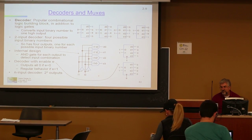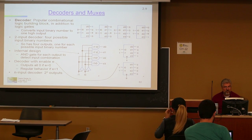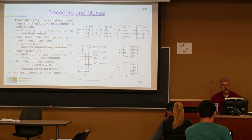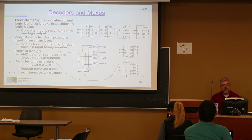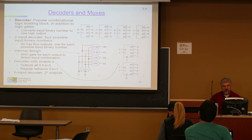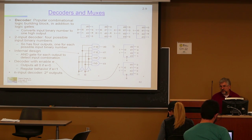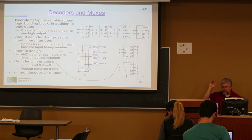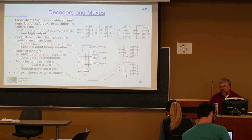A student notes: the second bullet says a 2-input decoder has 4 possible inputs. Right — a 2-input decoder has 4 possible input binary numbers: 00, 01, 10, 11. And it has 2 to the n outputs, of which only 1 will be active at any one time, so it really only has 4 possible outputs.